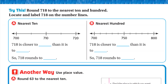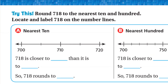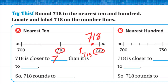Try this: round 718 to the nearest 10 and 100. For the nearest 10, on the number line we have 700, 710, 720. The midpoint between 710 and 720 is 715. So 718 is after 715, meaning 718 is closer to 720 than to 710. So 718 rounded to the nearest ten is 720.